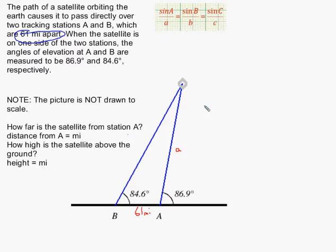So far little a is the variable I'm solving for, the distance between tracking station A and the satellite. The rule is that little a is the side opposite big angle A, so I'll call this angle A, which is 84.6 degrees.